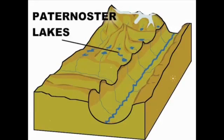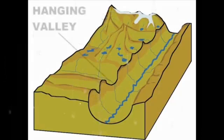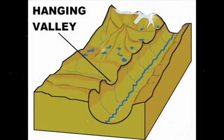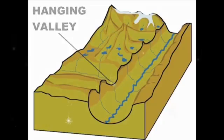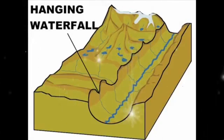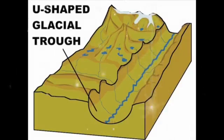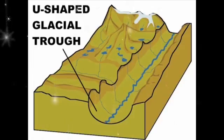Paternoster lakes are a series of lakes strung together by a single stream or braided stream system; these occur where a glacier has receded and are created by terminal moraines. A hanging valley is formed by a tributary that ends at a cliff above a larger trunk glacial valley. A hanging waterfall forms in a tributary hanging valley, falling into the valley formed by the main trunk glacier. After the trunk and tributaries of a glacier recede, a U-shaped glacial trough remains.